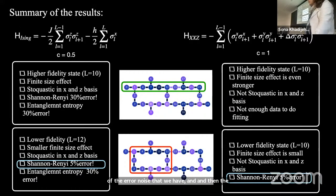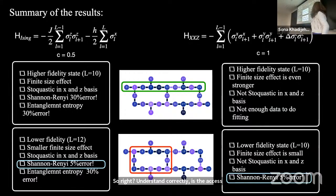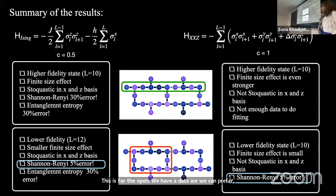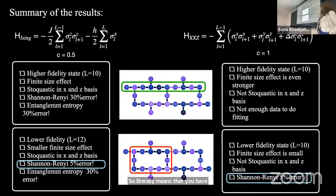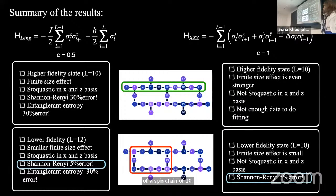For the XXZ open boundary condition with a spin chain of 10, there is also an oscillation issue. Looking at subsystem sizes 2, 4, 6, and 8, you only get the even ones for the XXZ model, giving literally 2 data points. Even with exact diagonalization you cannot get anything meaningful from 2 points. But for the periodic boundary condition we don't have that oscillation problem, and with 12 data points we can perform the fitting.